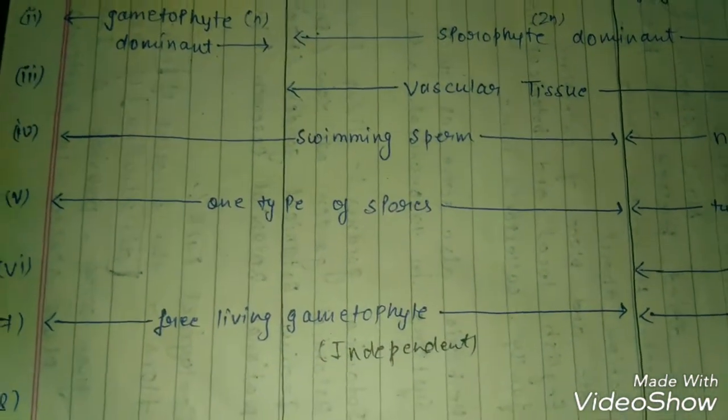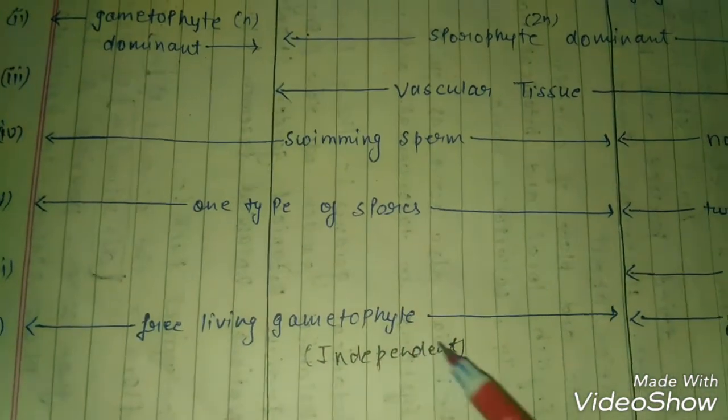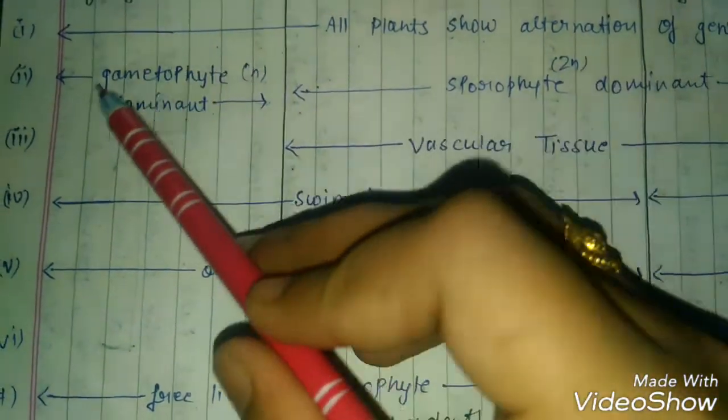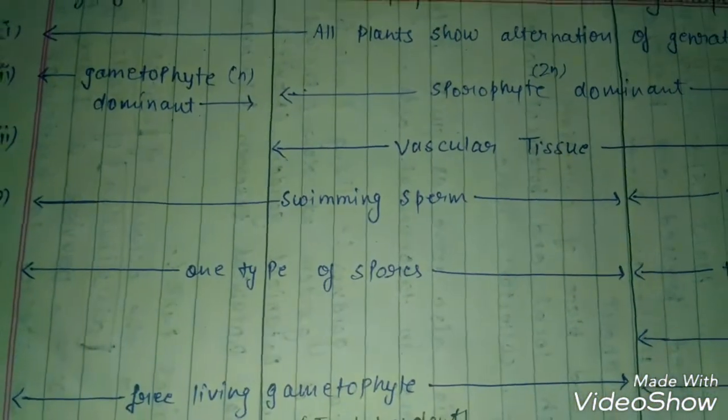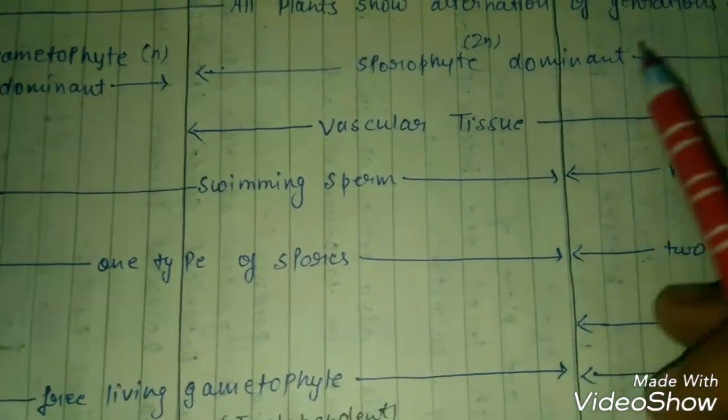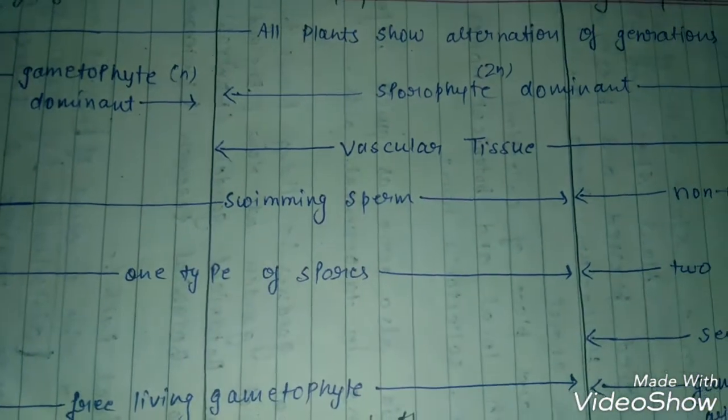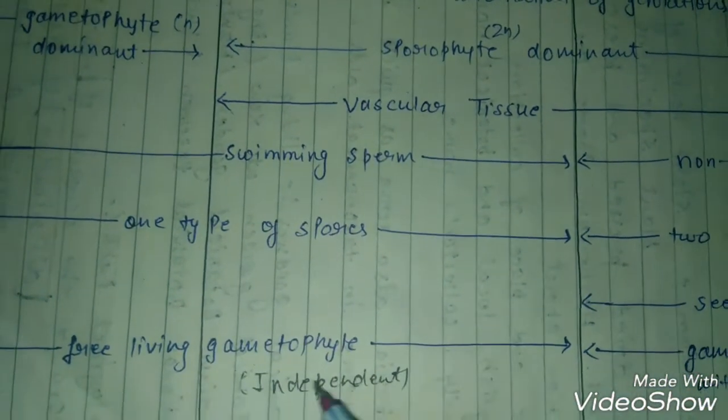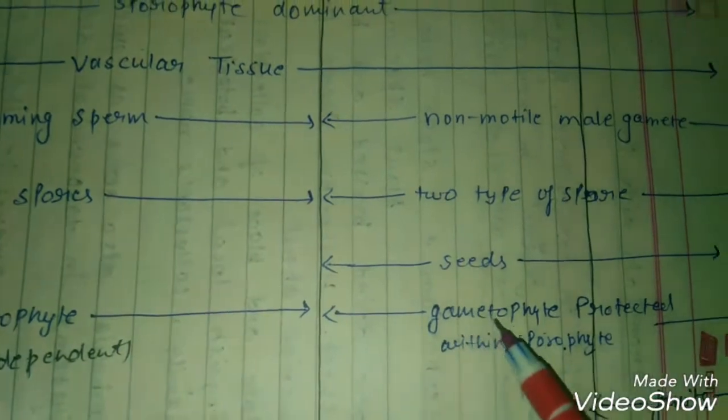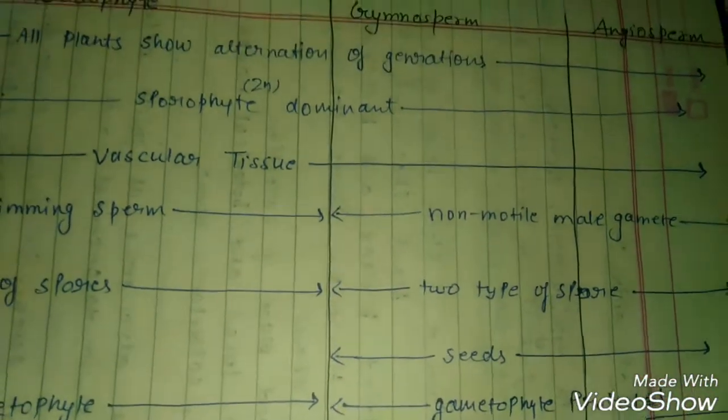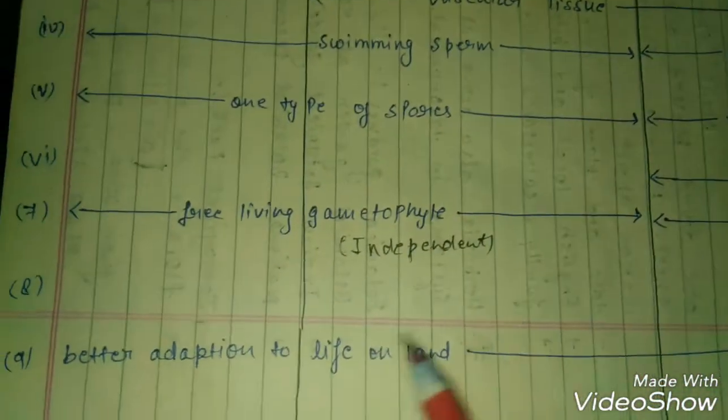It's simple - free living gametophyte is the most important thing. It will be independent in bryophyte and pteridophyte. After that, the sporophyte starts from here. In gymnosperm and angiosperm, gametophyte will also be dependent, and sporophyte is so important.